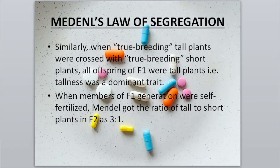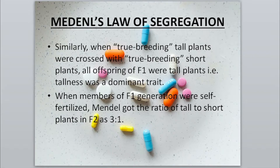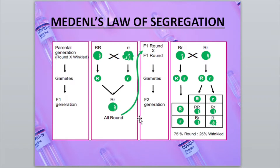When the F1 tall plants were self-fertilized, Mendel got the same 3:1 ratio in the F2 generation as he had seen for seed shape. Mendel's work was successful not only because he chose the pea plant, but also because he applied the principle of statistics and used ratios in the correct proportions. Let us study this outcome using a flow sheet diagram to understand how the 3:1 ratio arises.